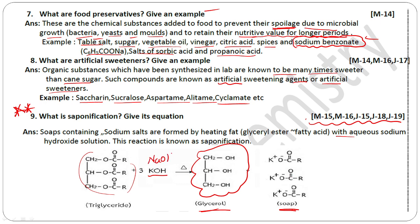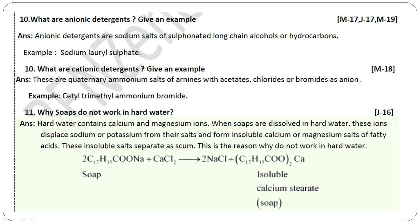NaOH is used to make sodium soap; KOH is used to make potassium soap. What are anionic detergents? Give an example. Anionic detergents are the sodium salts of sulfonated long chain alcohols or hydrocarbons. The best example is sodium lauryl sulfate.